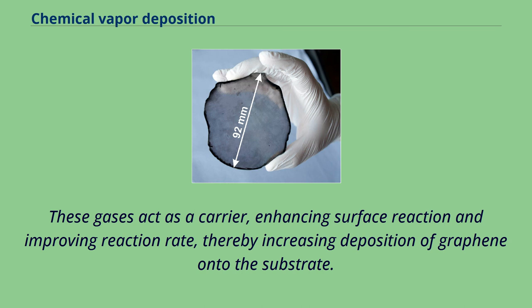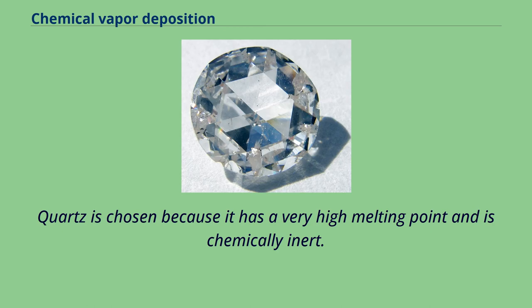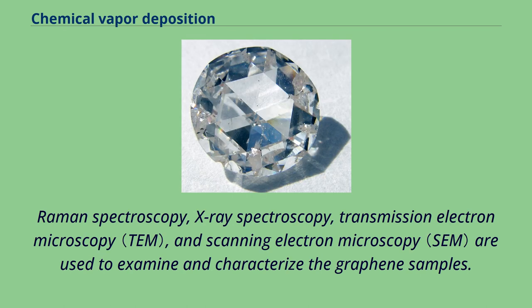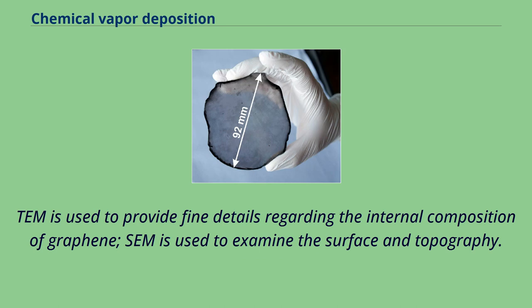Standard quartz tubing and chambers are used in CVD of graphene. Quartz is chosen because it has a very high melting point and is chemically inert — it does not interfere with any physical or chemical reactions regardless of the conditions. Raman spectroscopy, X-ray spectroscopy, transmission electron microscopy, and scanning electron microscopy are used to examine and characterize the graphene samples. Raman spectroscopy is used to characterize and identify graphene particles. X-ray spectroscopy characterizes chemical states. TEM provides fine details regarding the internal composition of graphene. SEM is used to examine the surface and topography. Sometimes, atomic force microscopy is used to measure local properties such as friction and magnetism.